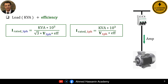For a single-phase dynamic load or single-phase motor, the equation for the rated current of the motor load is the rated power value in KVA multiplied by 10 cubed, divided by the single-phase rated voltage in volts and the motor's efficiency.